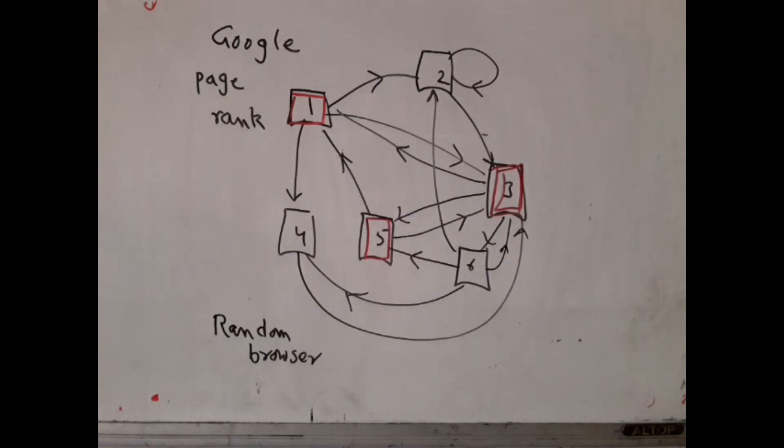Now, Google's idea is, if a page is very well connected with others, then naturally, he will be coming to that page again and again and again and again. So that will give you an idea about which page is more important. If you just keep on randomly clicking, then you will find that there are certain pages where you are going much more frequently than some other pages. So that is what they wanted to find out.